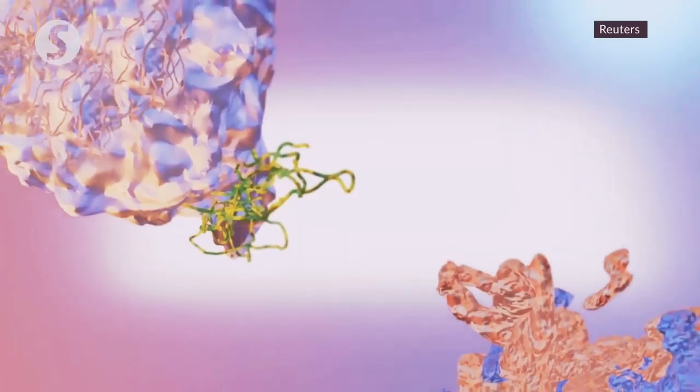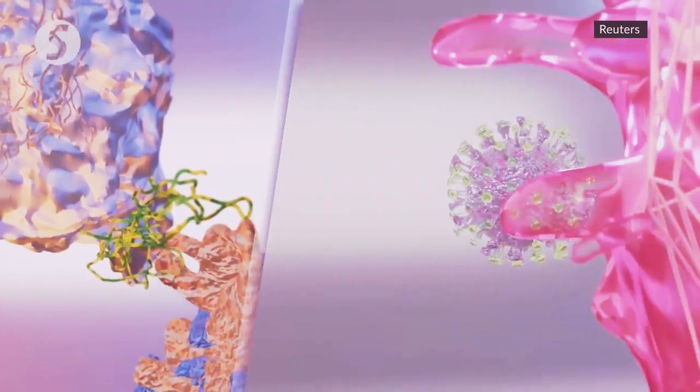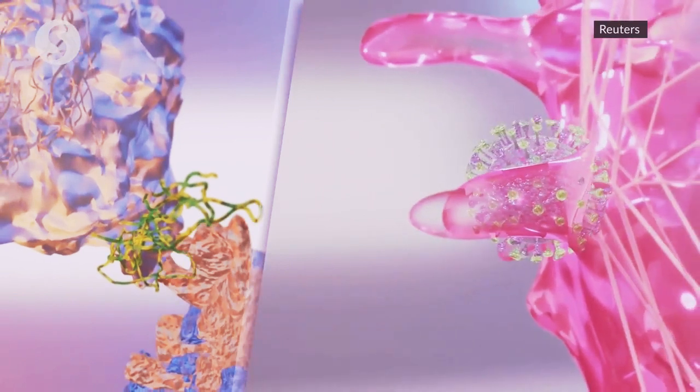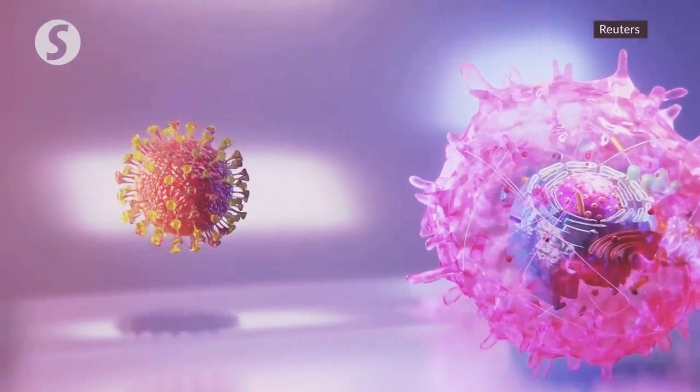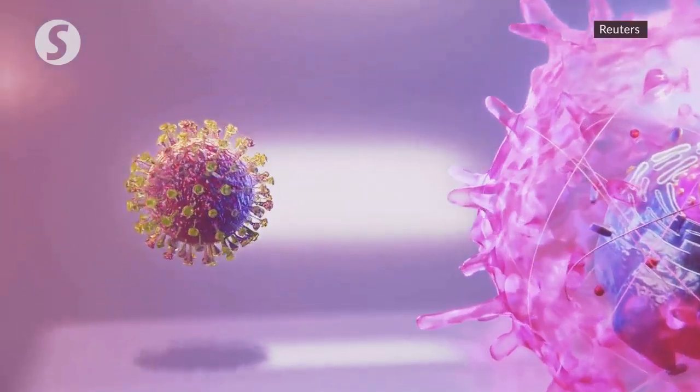The virus targets a human ACE2 receptor that has bonded with an amino acid transporter. This subtype of ACE2 structure has never been discovered before. The virus uses the spike protein's up-RBD to penetrate the cell.